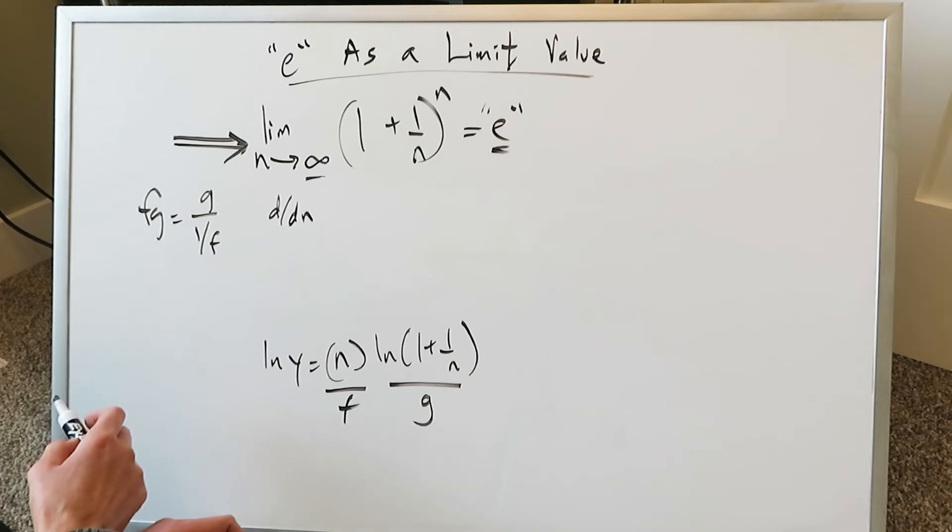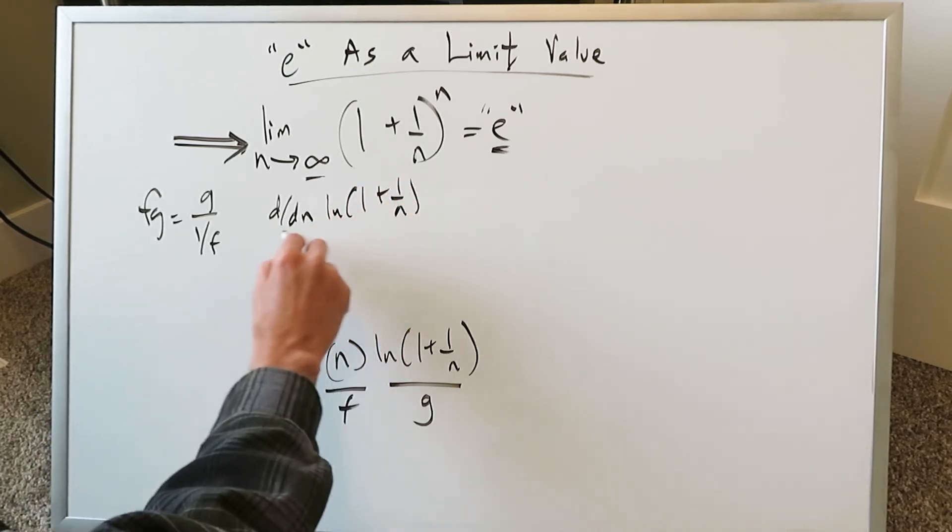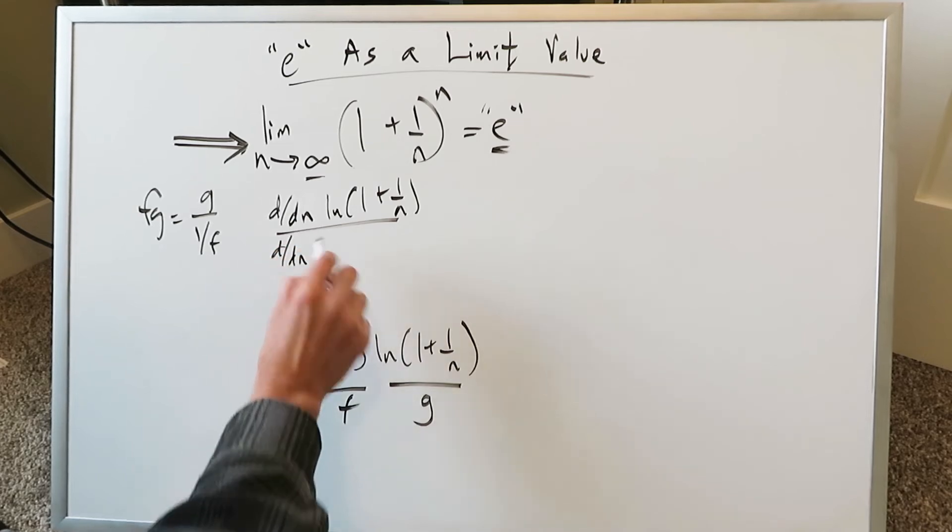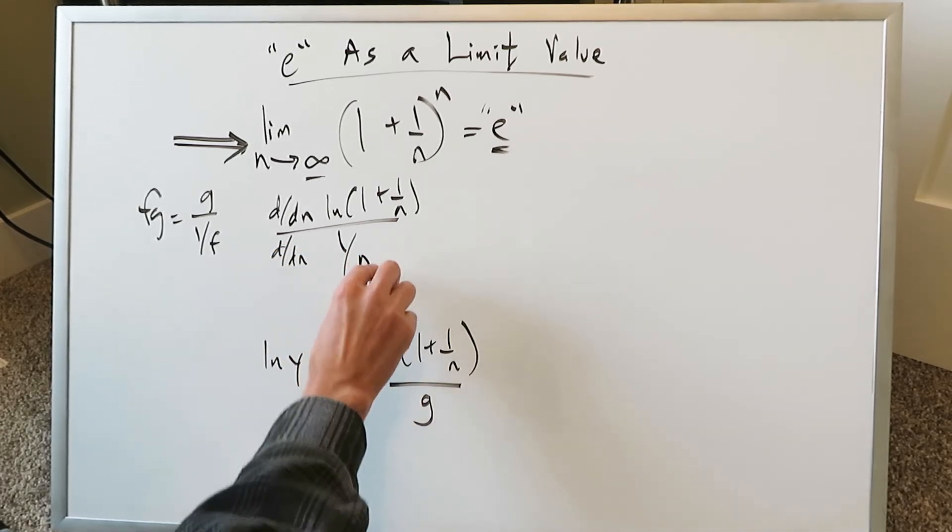You know it's going to go to the L'Hopital's rule procedure. You'll do ln 1 plus 1 over n. And then you'll do the derivative here with respect to n of this f function which here happens to be n.